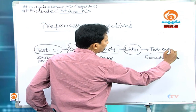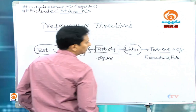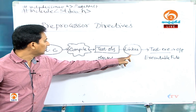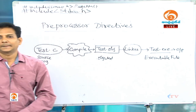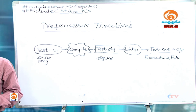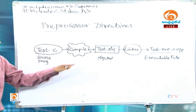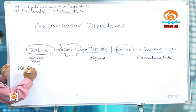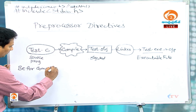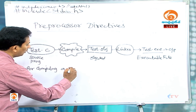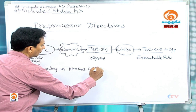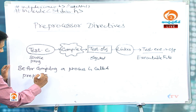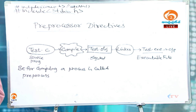When we execute this program, we get the output as a result. The compiler and linker interact to give the executable file. Before compiling, a process called preprocessing takes place. Before compiling, a process is called preprocessing.